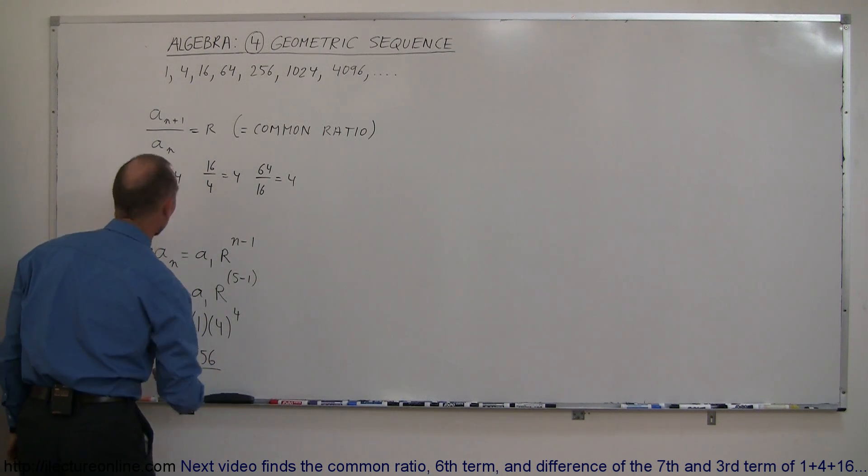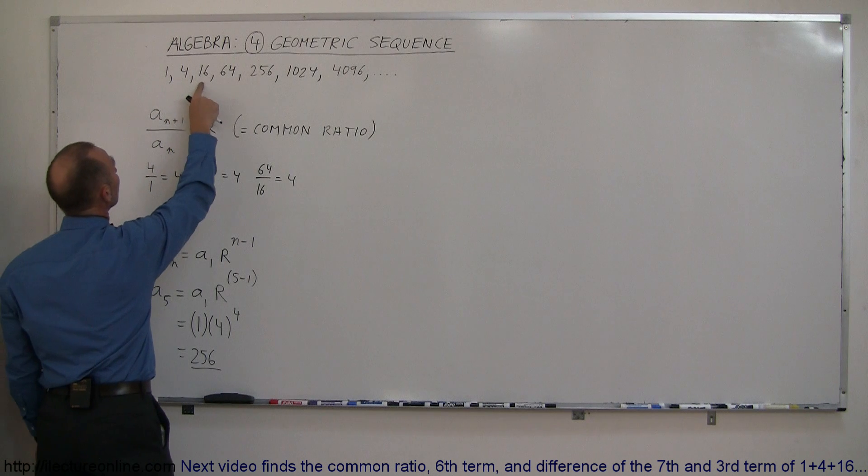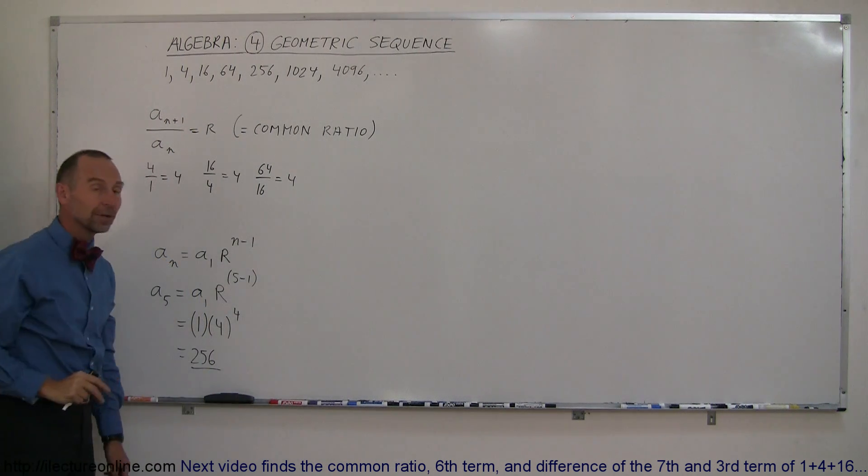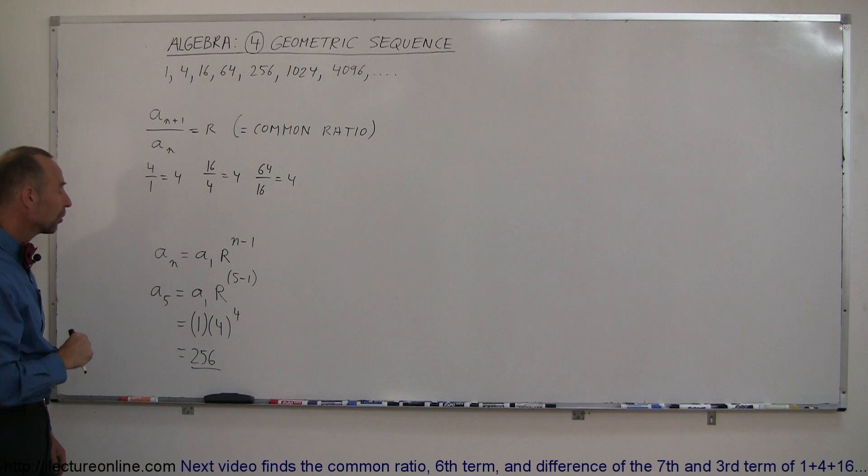And let's see if that's correct. So 1, 2, 3, 4, 5. Sure enough, we got the right number, and that's how you find the nth number in a geometric sequence.